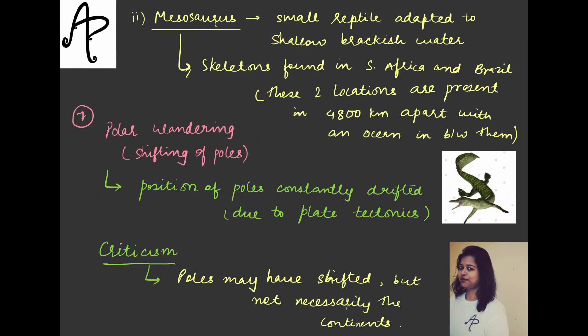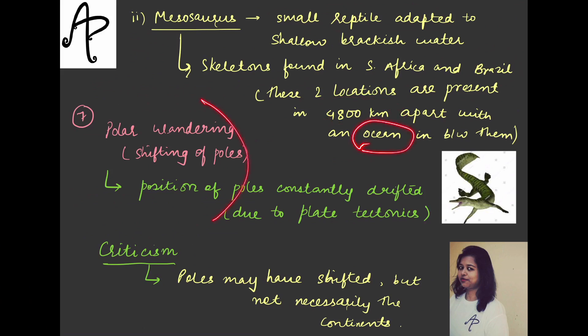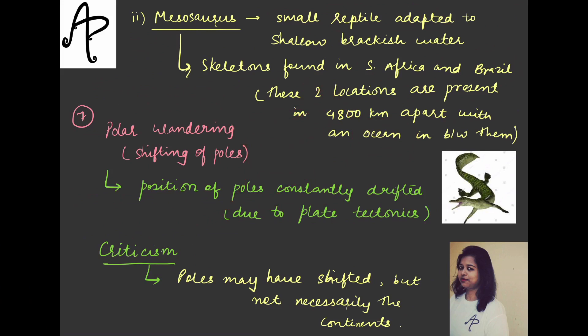Another thing about fossils is the Mesosaurus — small reptiles adapted to shallow brackish water. Their skeletons were found in South Africa and Brazil only. These two locations are presently around 4,800 km apart with an ocean in between. So how is it possible that the skeleton has been found only in these places? This means Brazil and Africa — South America and Africa — were somehow related, which makes this another evidence.